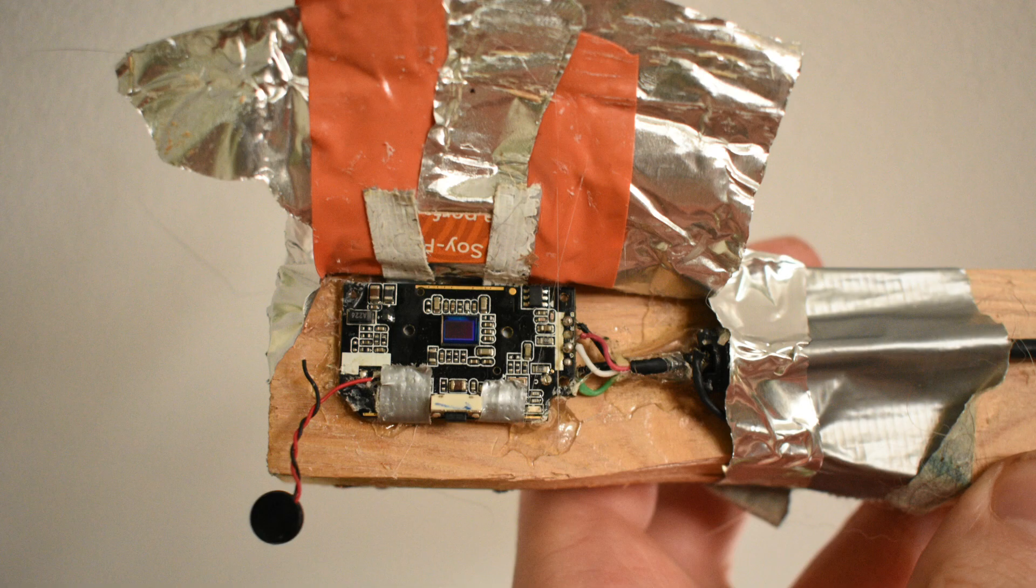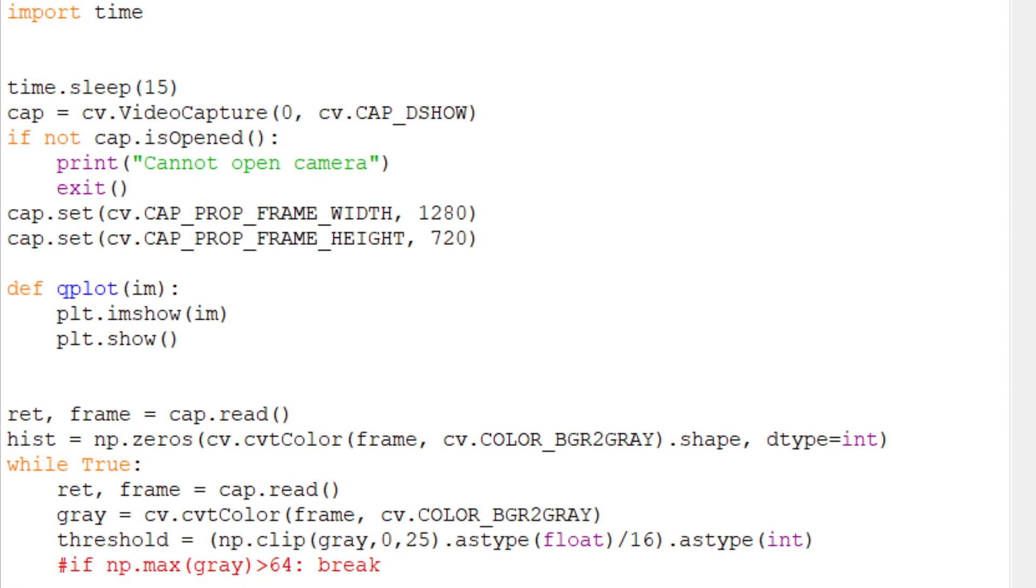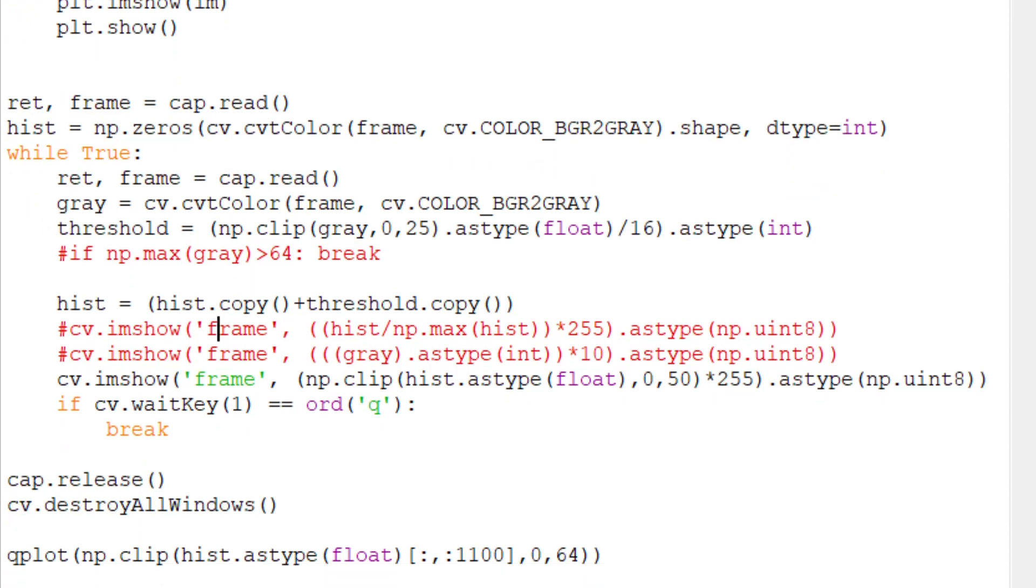I switched to using a bare CCD sensor which I had stripped from a webcam. I covered this with some foil tape to block any visible light from coming in. I wrote a short Python program to add up each pixel value of the CCD over a given exposure time. This is the result.